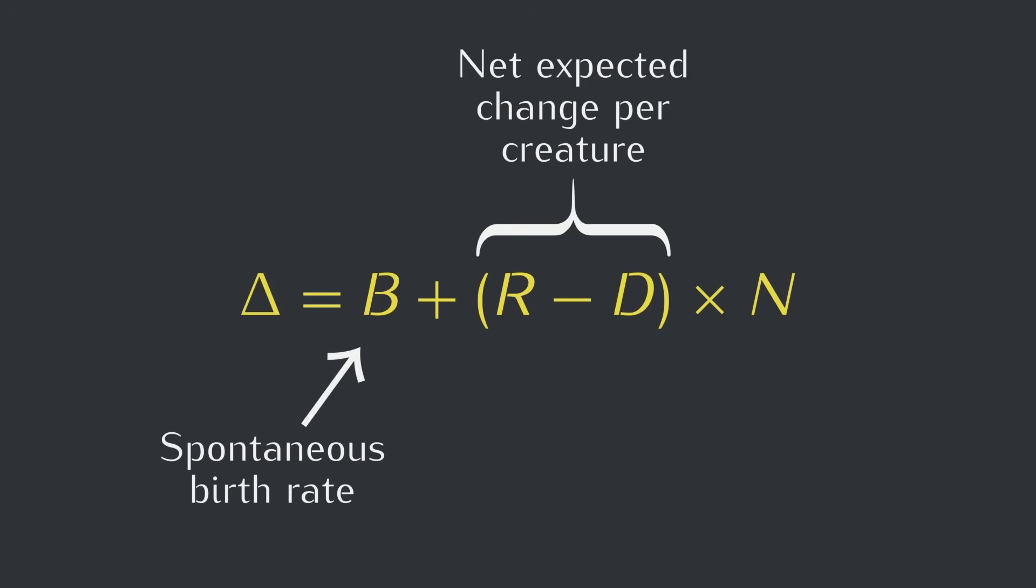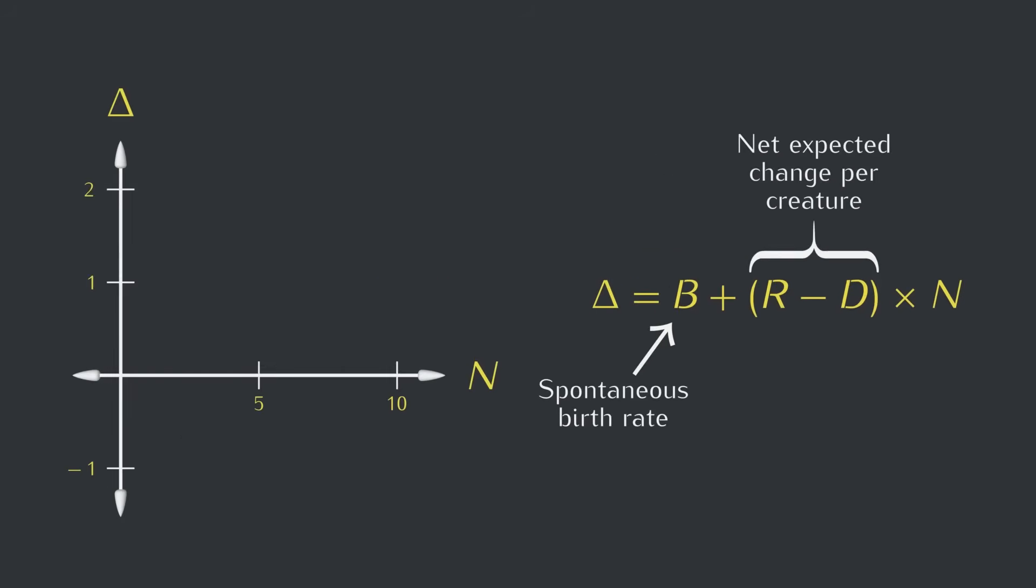So now we have the expected change written as a function of the number of creatures. For any number of creatures N, we can determine the expected change delta. Alright, let's look at a specific situation.